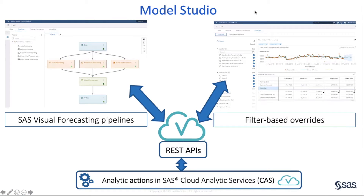Let's get started with a quick high-level look at the multi-tiered design of SAS Visual Forecasting. As this figure shows, when you interact with the Model Studio Graphical User Interface, your actions are communicated through a REST API to what we call CAS actions, which are units of functionality that run on your CAS servers. The interface you interact with is decoupled from the logic and algorithms performed by SAS Visual Forecasting.